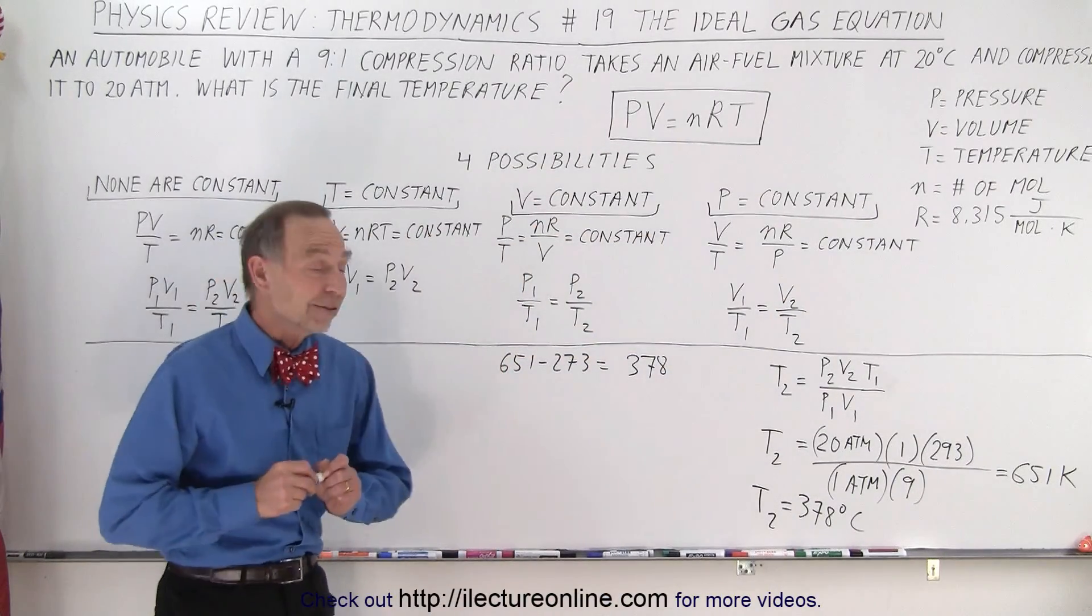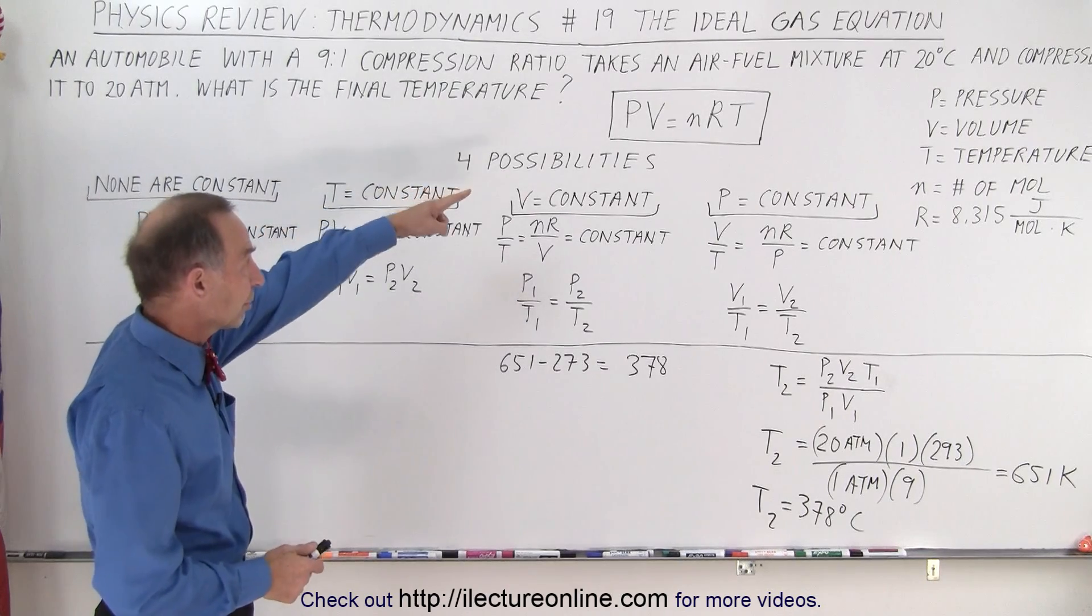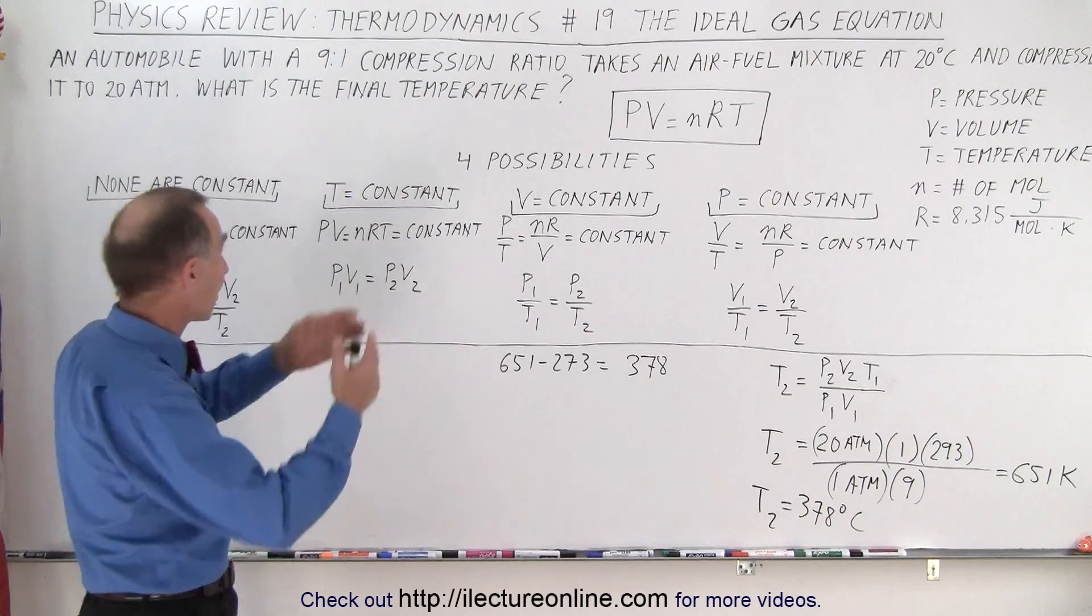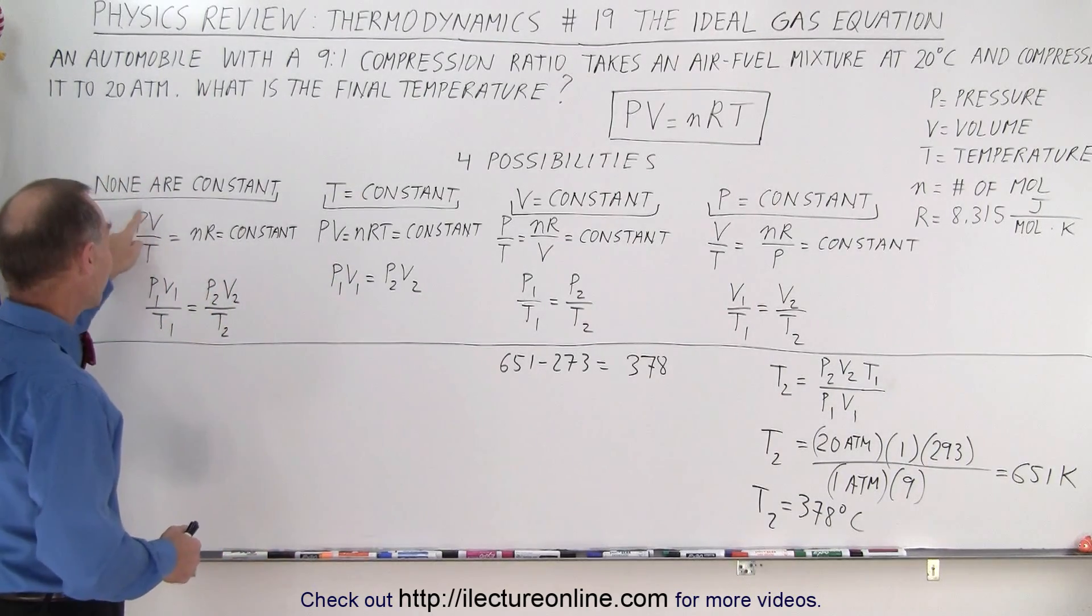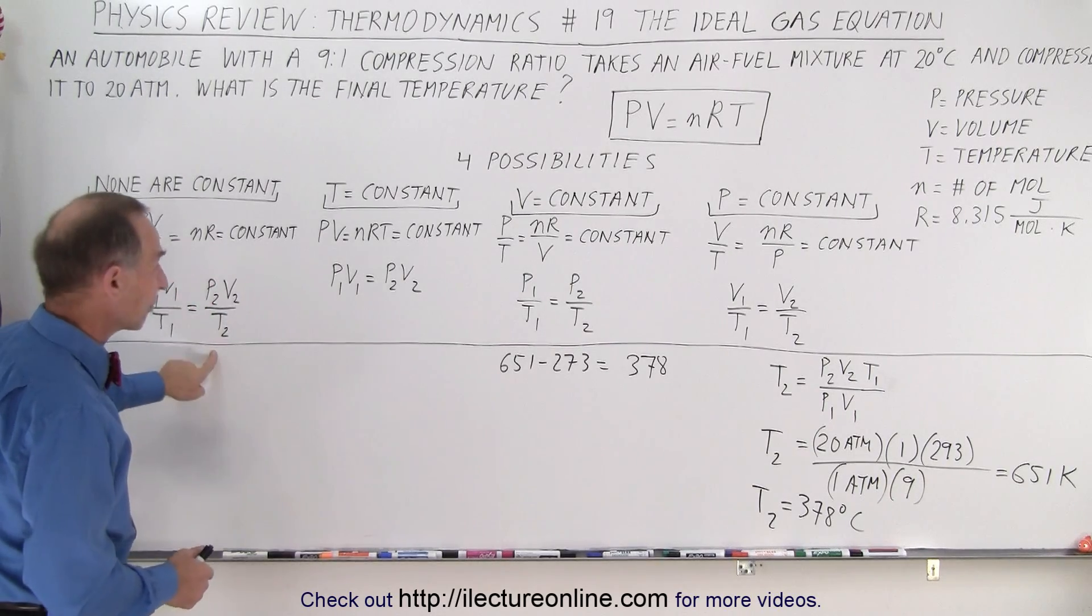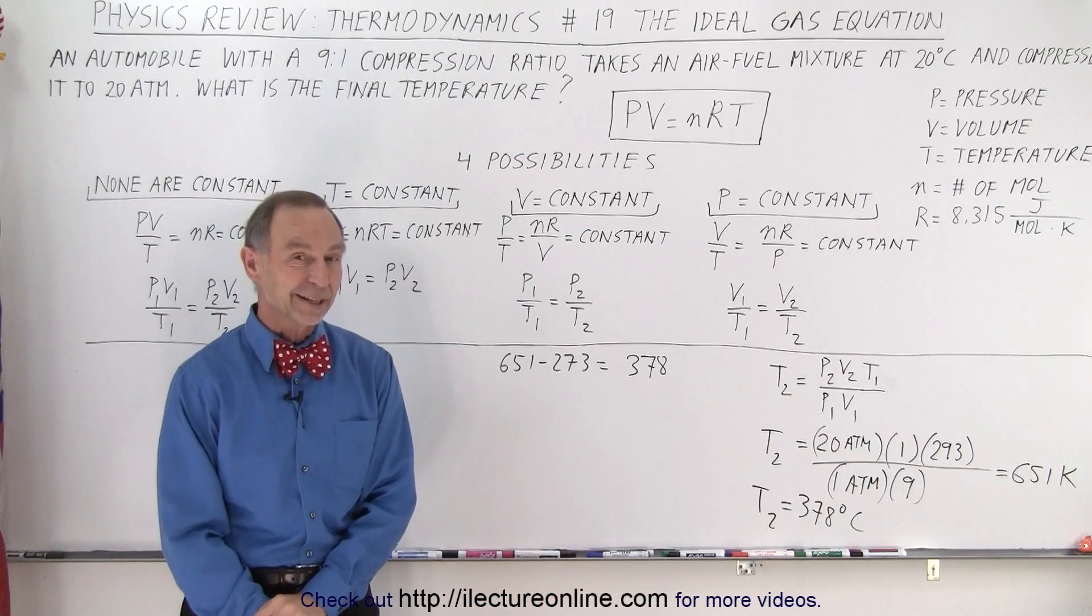All right, and that is how the problem is done. So again, take your ideal gas equation, determine which of the state variables is constant, if any. In our example, none of them were constants, so we take this equation and set PV over T equal to P2V2 over T2, solve for the variable you're looking for, and plug in the numbers. That is how it's done.